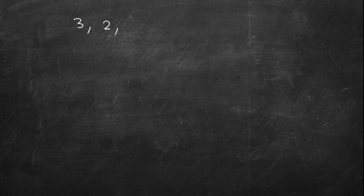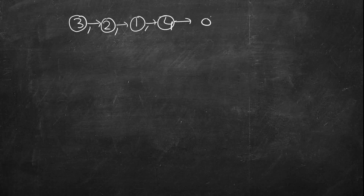Now how can we do insertion sort on a linked list? It's very simple. Let's take an example: we have 3, 2, 1, 4 and make them a linked list. So next of 3 is 2, then 1, then 4, then null, and we are given the head pointer.